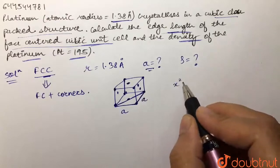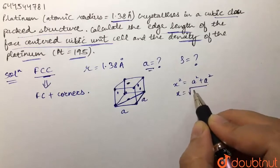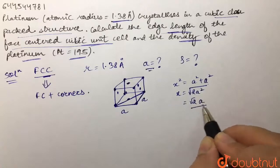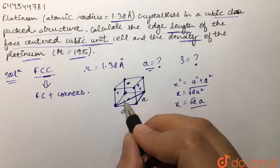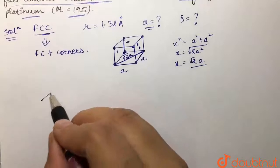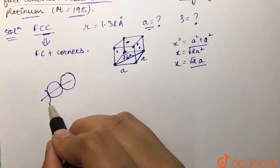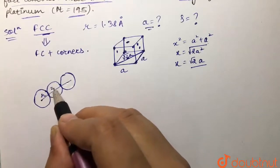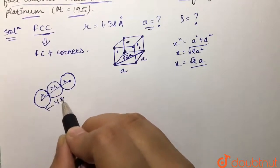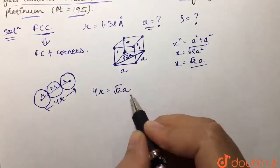By the Pythagorean theorem: x² = a² + a² = 2a², so x = √(2a²) = √2·a. The face diagonal equals √2·a. Now, along that face diagonal, the arrangement of atoms is: one atom of radius r at each corner and one atom of radius r in the center of the face, giving a total length of 4r. So 4r = √2·a.